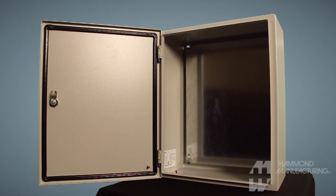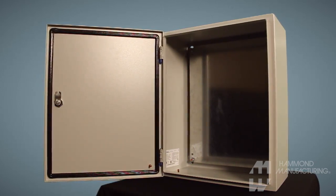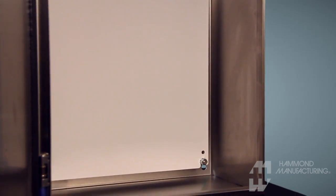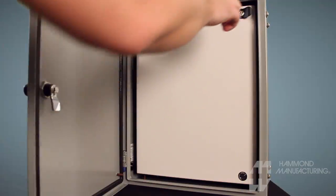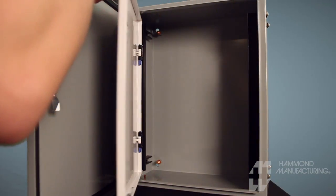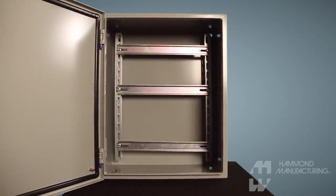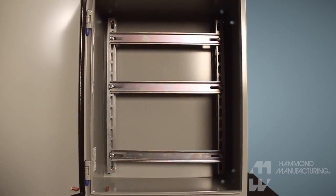Optional inner mounting panels are available in both unpainted galvanized steel or painted white mild steel versions. Alternative internal mounting options include swing-out panels, 19-inch rack-mount swing frames, and DIN rail kits.